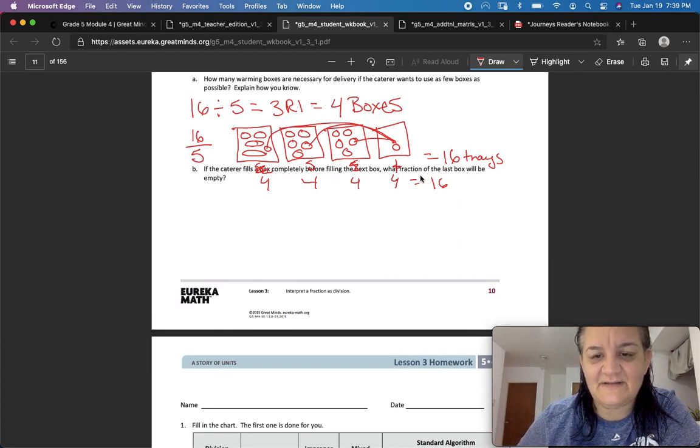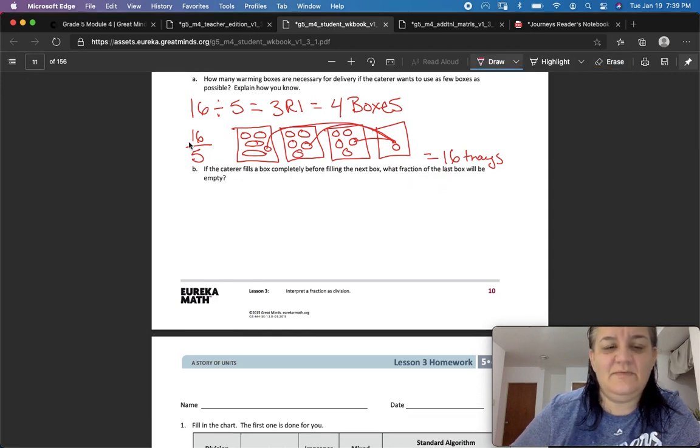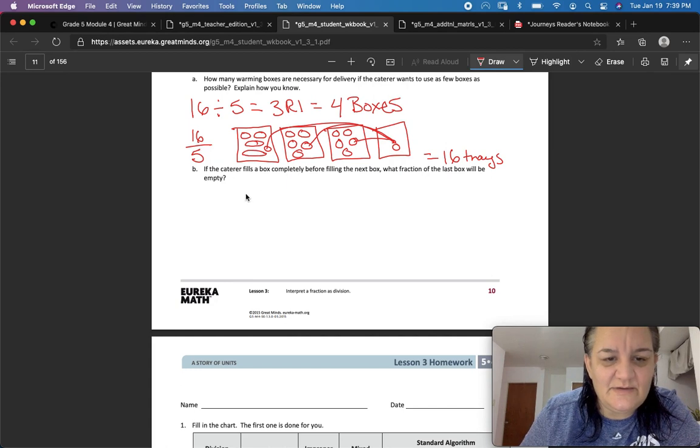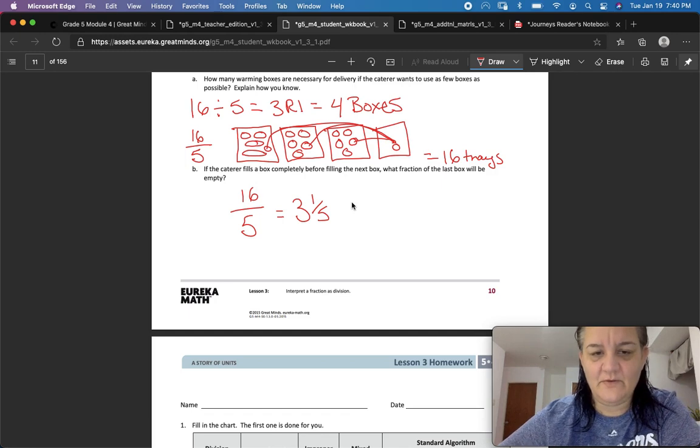If the caterer fills boxes completely before filling the next box, what fraction of the last box will be filled? We just figured that out. So sixteen over five or sixteen divided by five equals three and one fifth, right? So one, two, three, and one fifth. Perfect.